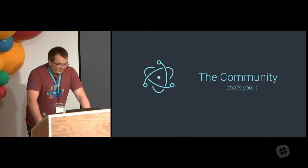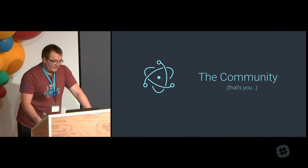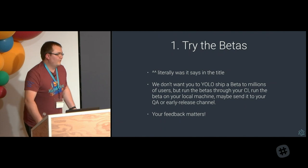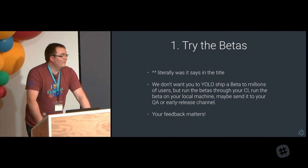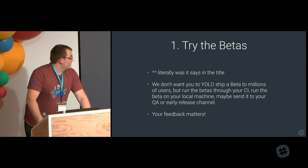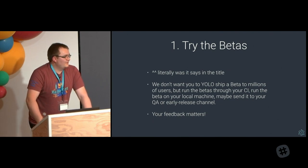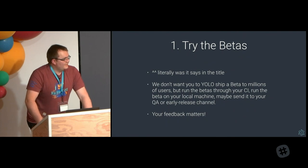Last but not least: the community — that's you folks. All of what I've said is what the Electron maintainers are doing and how we're working to get better. There are some things you can all help us with, and I'm going to highlight the two that have the most impact. Number one: try the betas. We don't want you to throw the betas out to millions of users — we just want your feedback. We use your feedback to determine when we can consider a release stable, and it's critical to Electron working properly when we do release stable. Don't go shipping betas to millions of users — just try it, run it through your QA, run it on your local machine, run it through your test suite, see if it works. If there's an obvious problem, raise an issue and we will try to fix it.